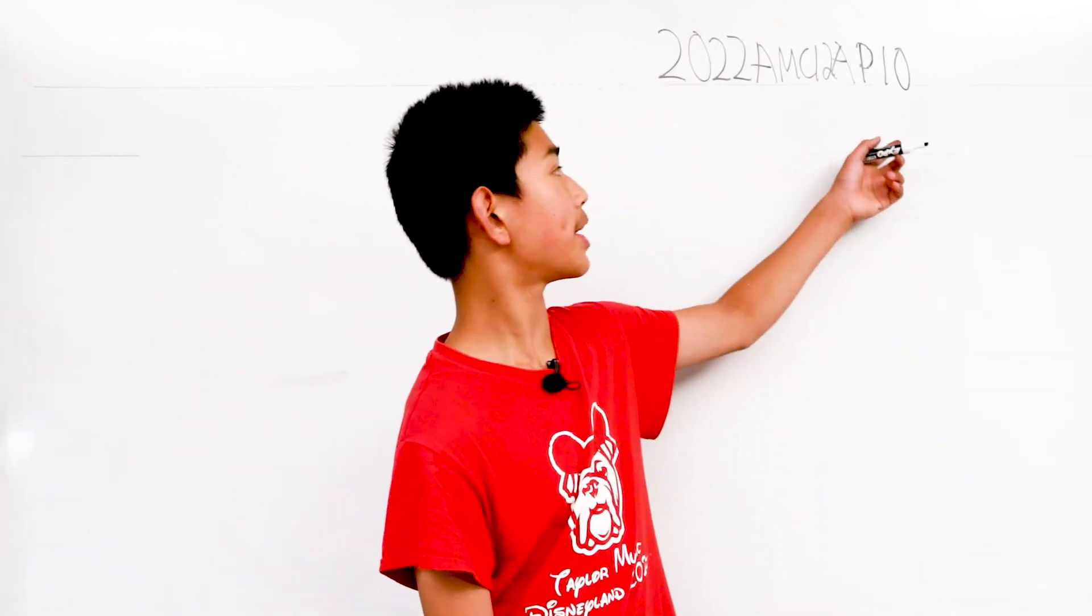We're solving problem 10 from the AMC 12A from 2022. How many ways are there to split the integers 1 through 14 into 7 pairs such that in each pair, the greater number is at least 2 times the lesser number?